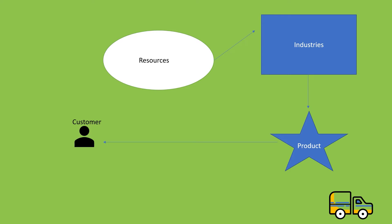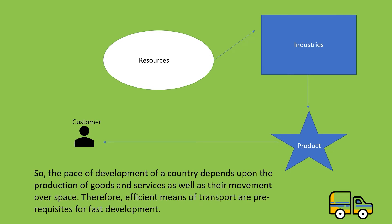Most parents depend on the school bus for shuttling children to and fro from school. Even though schools are now providing online education, we are slowly returning to on-site school. If we must withdraw money from our account, we must travel to the bank depending on the vehicle we own or public transport. So we can say that transport plays an important role in the development of a country — the pace of development depends upon the production of goods and services as well as their movement over space.